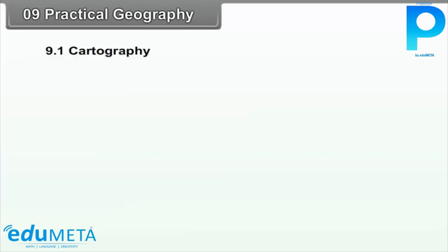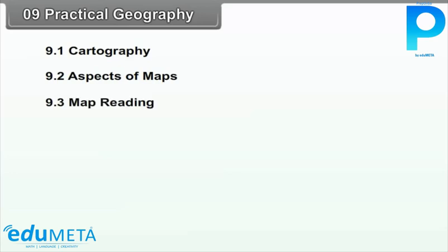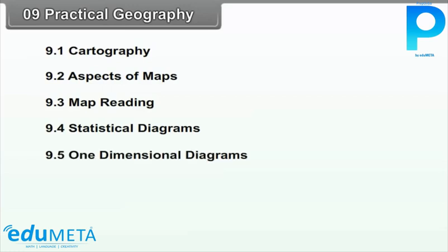Chapter 9: Practical Geography. We will study the following points in this chapter: 9.1 Cartography, 9.2 Aspects of Maps, 9.3 Map Reading, 9.4 Statistical Diagrams, 9.5 One-Dimensional Diagrams, and 9.6 Two-Dimensional Diagrams.